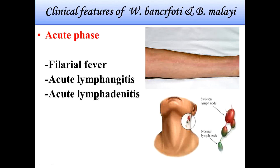There are three main stages: the first is the asymptomatic microfilaremia stage, then the acute phase, and finally the chronic stage. In the acute phase there can be filarial fever, which can go up to one to three degrees Fahrenheit or more. There is also acute lymphangitis — inflammation of the walls of lymphatic vessels, presenting as an erythematous streak in the arm — and acute lymphadenitis, which is inflammation or enlargement of a lymph node.